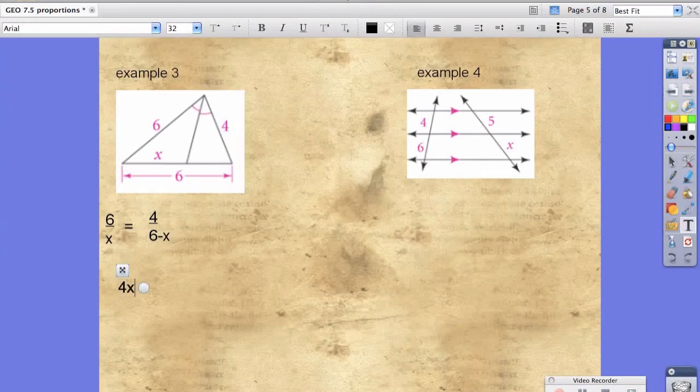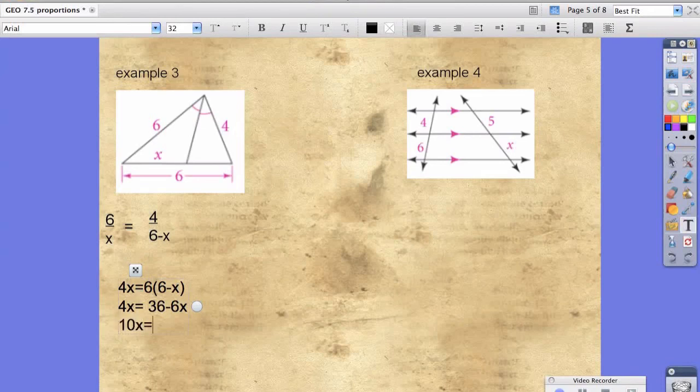So we're going to take the cross product again. So 4x is equal to 6 times the quantity 6 minus x. 4x equals 36 minus 6x. We get 10x equals 36, and x equals 36 tenths, or 18 fifths.